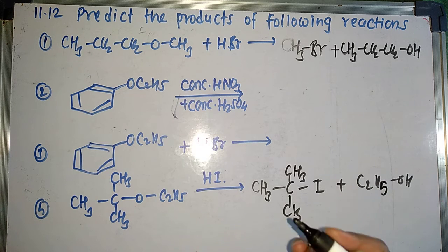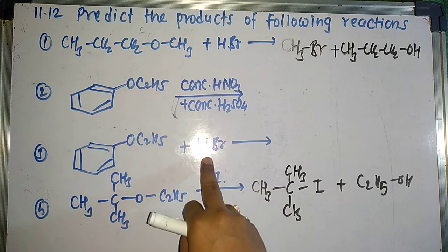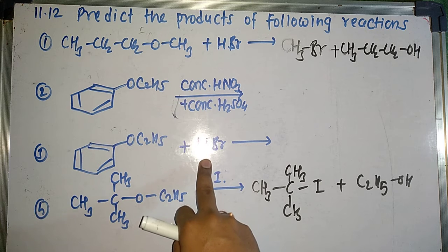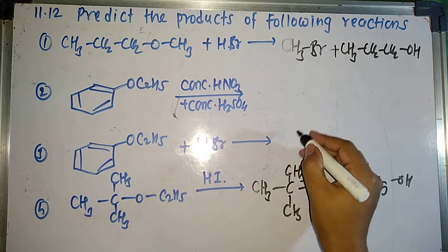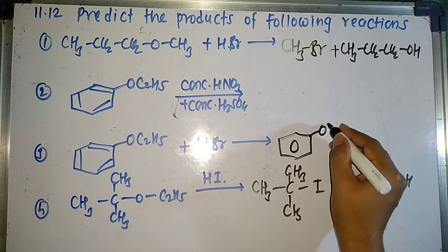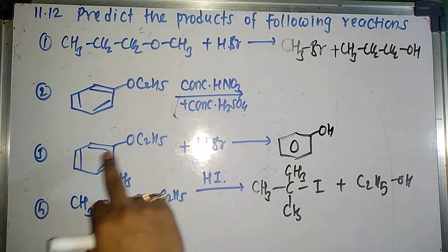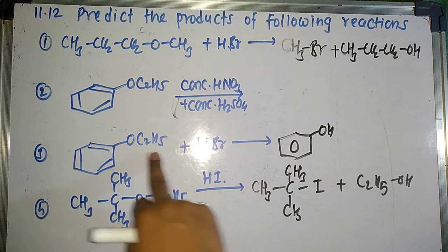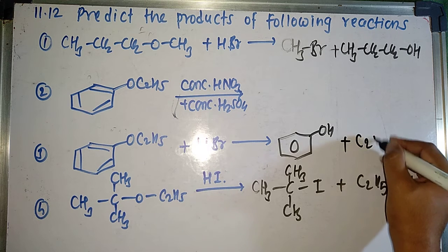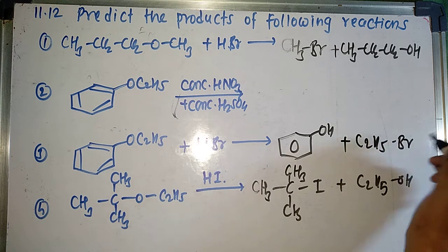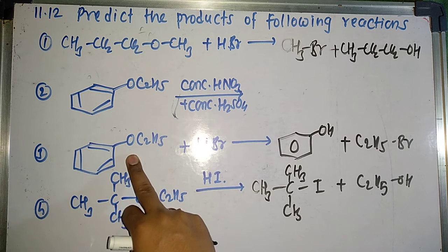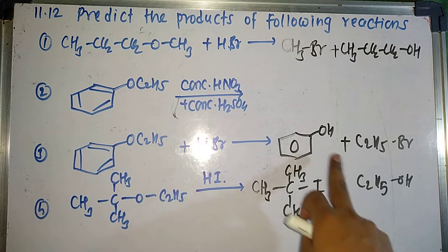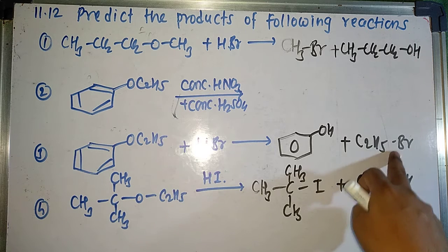So in the next example, condition is given that is HBr. Here we are having HBr. It is aromatic ether. So whenever aromatic ethers are given, your one product is fixed. You will get phenol definitely. It means this hydrogen gets attached to the benzene attached to oxygen. So remaining C2H5 will definitely form bromide, that is C2H5Br. Some conditions are there for the cleavage of ether that you have to remember.